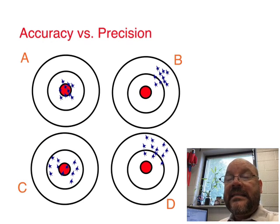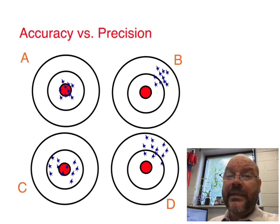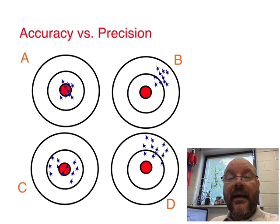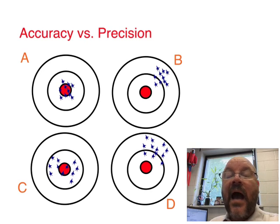So here are the things that can happen. We have accuracy and we have precision. Accuracy is how near the mark it is. And precision is a word that helps us explain how spread out things are.